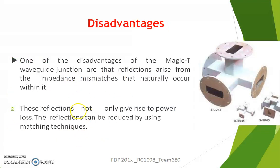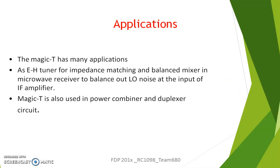The disadvantages: one disadvantage of the Magic T is that it suffers from reflections due to impedance mismatching that occur naturally within it. These reflections can give rise to power loss, and they can be reduced by using different matching techniques.